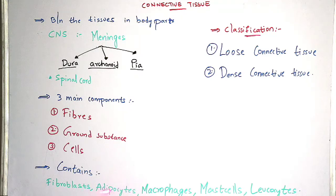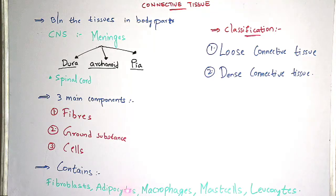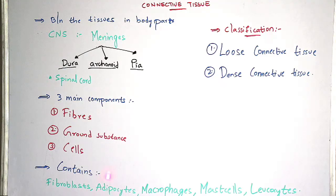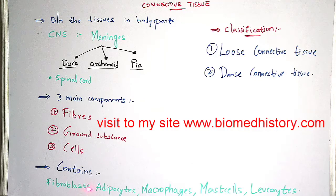Coming to adipocytes — the suffix '-cytes' means cells. So the fat cells which are mainly present in the adipose tissue are known as adipocytes.